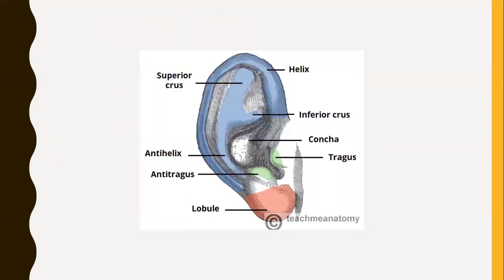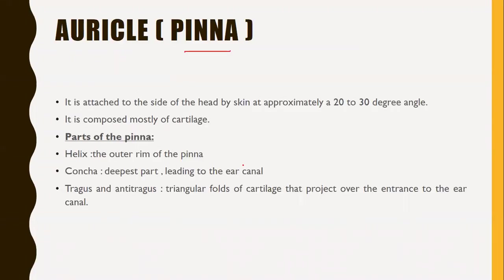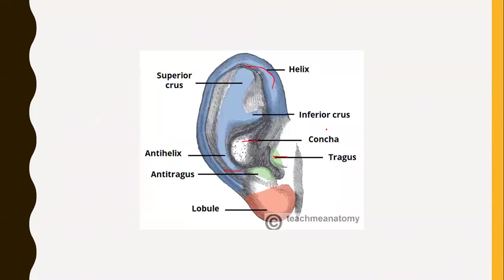In this picture we can see: first is the helix, the outer rim of the pinna; then the antihelix; then the concave, which is the deeper part of the external ear; and there is the tragus and antitragus, which are the triangular folds of cartilage that project over the entrance to the ear canal.